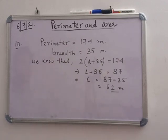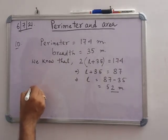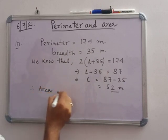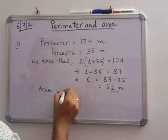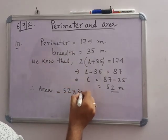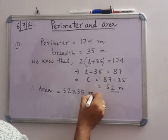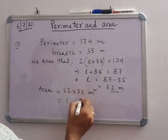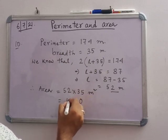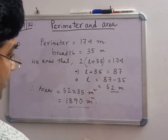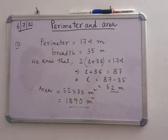And also area will be there. Area equals length into breadth, so 52 into 35 meter square, that means this is 1820 meter square. Note it down all of you.